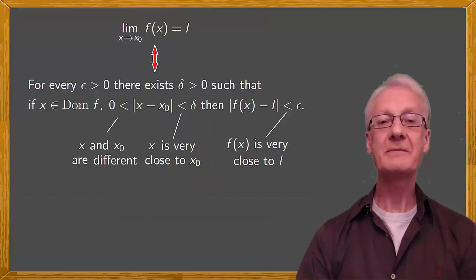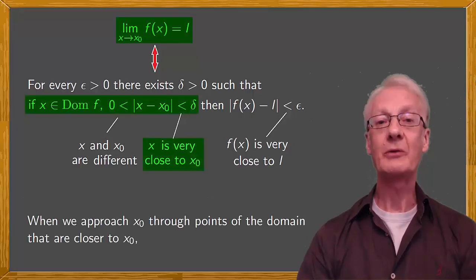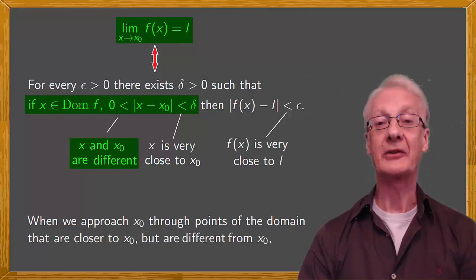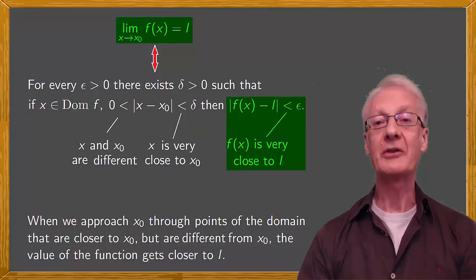In two simple steps we can understand clearly the meaning of limit. First, the limit as x tends to x0 of f(x) is L if, when we approach x0 with points of the domain that are closer and closer to x0, but are still different from x0, the value of the function gets closer and closer to L.